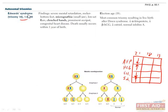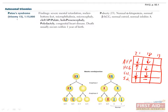Edwards syndrome is the second most common type of trisomy, with a prevalence of 1 in 8,000. It's much more severe than Down's, and patients have severe mental retardation, rocker-bottom feet, micrognathia (small jaw), low-set ears, clenched hands, a prominent occiput, and congenital heart disease. These babies are usually born alive but die within one year of birth. On the quad screen you can detect decreased alpha-fetoprotein, HCG and estriol, and normal inhibin A.